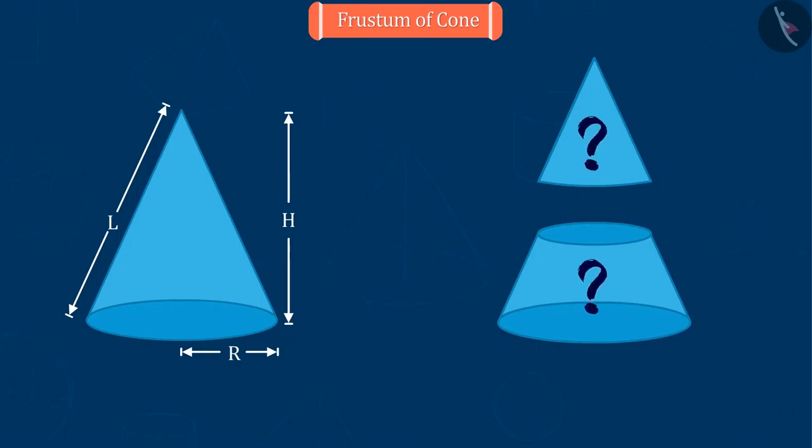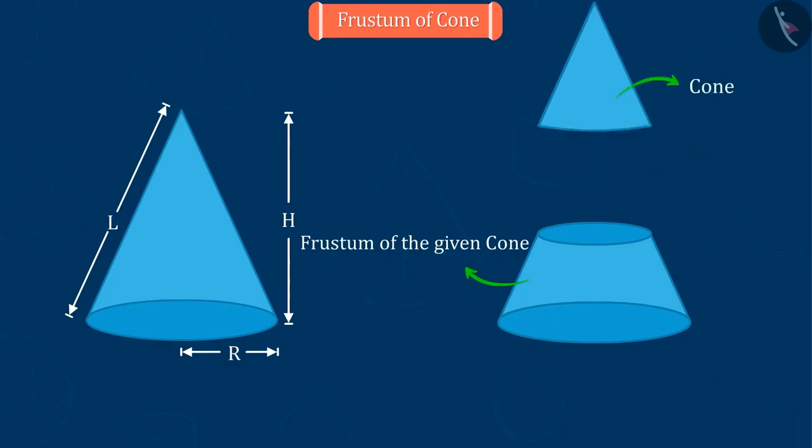So can you tell, what are these two pieces? Absolutely correct. The top piece is a cone and the bottom piece is the frustum of the given cone, which we are going to discuss today.